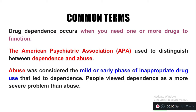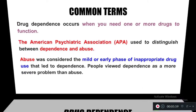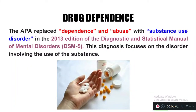Abuse can lead to dependence — in the alphabet, A comes first and D comes later. Abuse is the initial stage of using a drug in a mild amount, and dependence comes later. People with dependence have signs and symptoms different from those who are abusing.